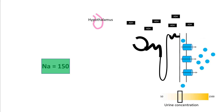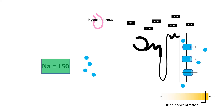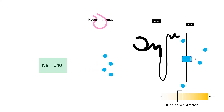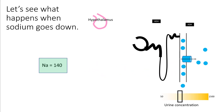As you absorb more free water, your urine becomes concentrated. The extra free water you absorbed dilutes your sodium back to 140 and everything returns to normal — your aquaporin channels disappear and your urine osmolality returns to normal.